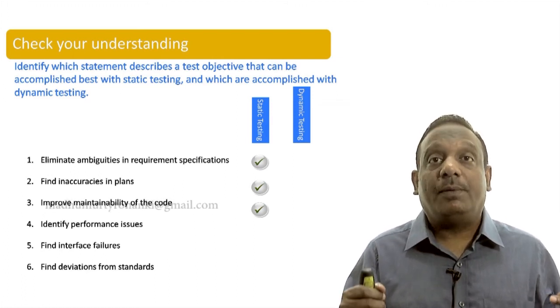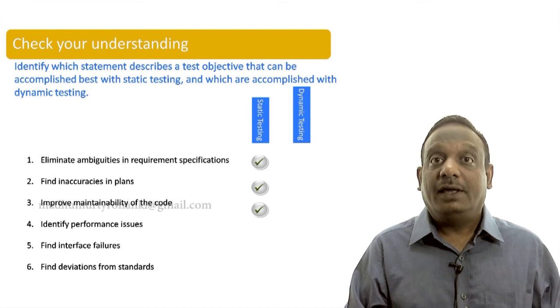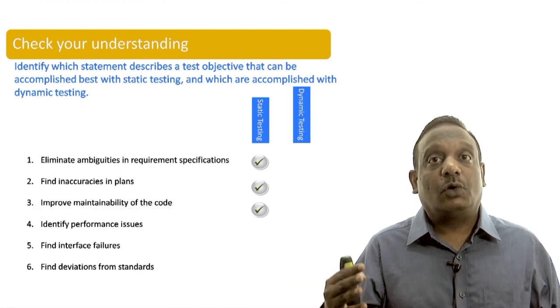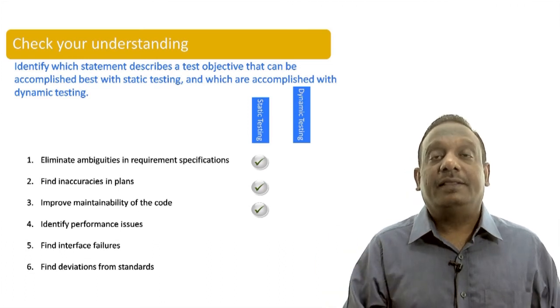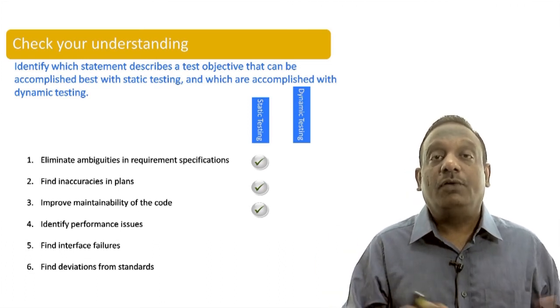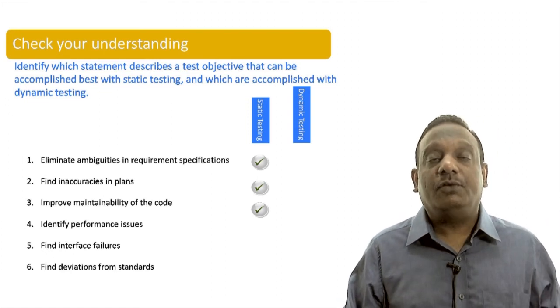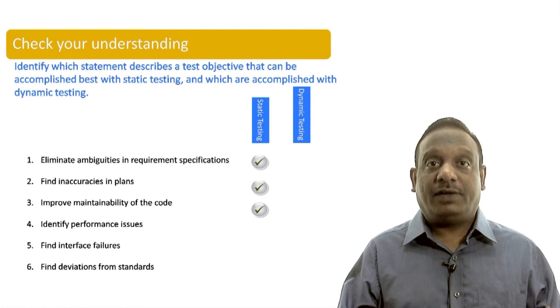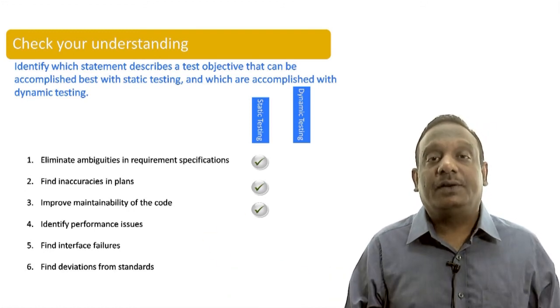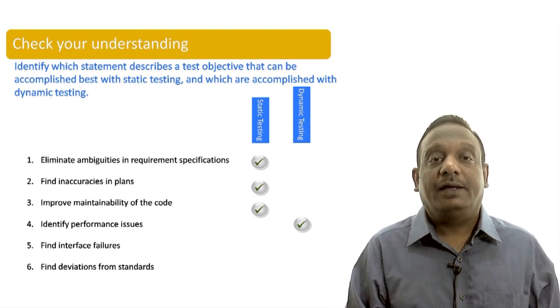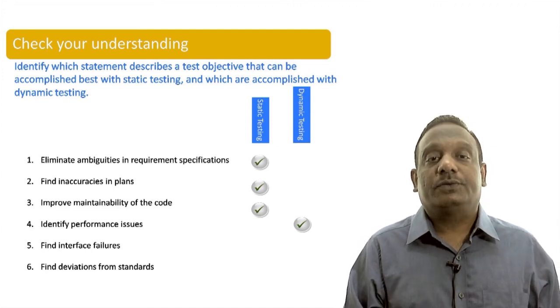Identify performance issues. Whether the software under concurrent usage load, whether it is slowing down or is it meeting the response times properly. How will you find that? By looking into your design document, can you find it? No. You have to execute the software under that concurrent usage load and then only you can find. Dynamic testing only can find the performance issues.